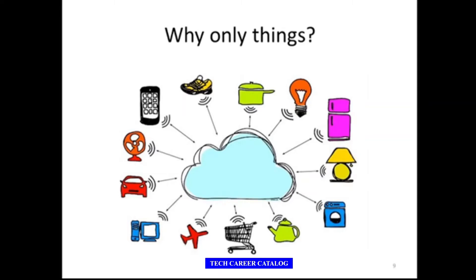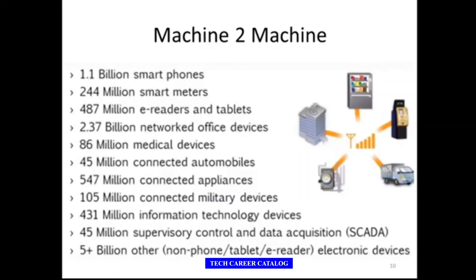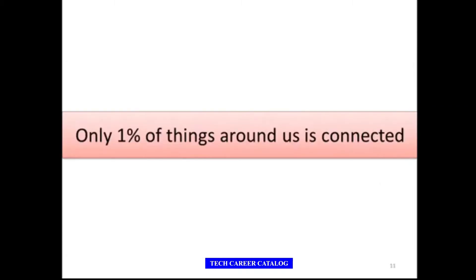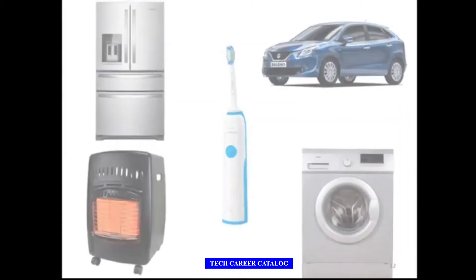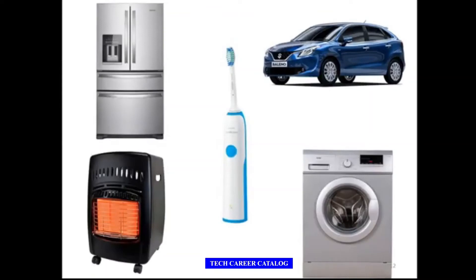For example, our shoes can measure the number of steps instead of our smartphone — that's why we call these things 'things.' You can look at this figure showing how many devices actually exist in the world. Out of all this, only one percent of the things around us is connected. Your refrigerator, washing machine, microwave oven, mixer grinder, television — all are still not connected to the internet. Various companies are now aiming to make all these things smarter by putting sensors, actuators, and internet connectivity into them.